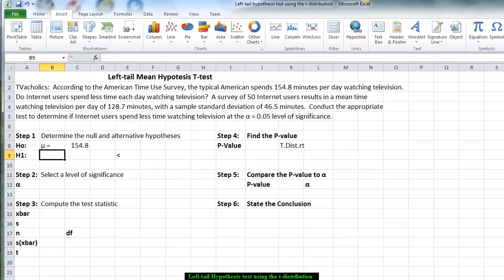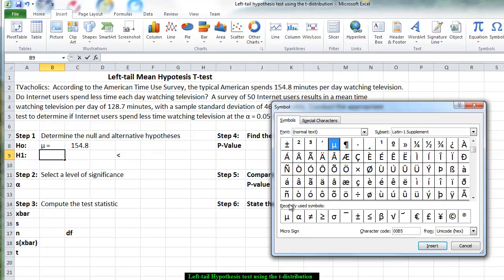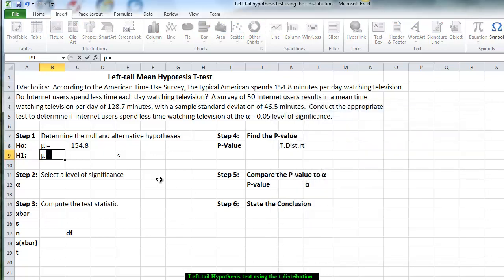And the alternative hypothesis says, do they watch significantly less? So is mu going to be less than the 154.8 of a minute? Now we want the level of significance. Looking at the information in our paragraph, it says we're using a 5% level of significance.